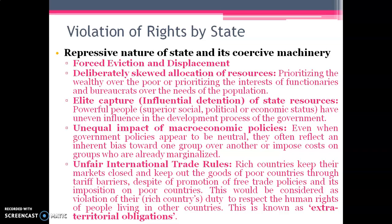The fourth factor is the unequal impact of macroeconomic policies. Whatever macroeconomic policies the government frames, it is not necessary that these policies affect each and every individual or sector equally — for some sectors it could be very beneficial, and for others not as much or sometimes even harmful. Even when government policies appear to be neutral, they often reflect an inherent bias toward one group over another. Sometimes the government, due to selfish motives, makes policies that look neutral but are actually biased for a particular group, benefiting that group while harming or imposing costs on already marginalized and disadvantaged groups.